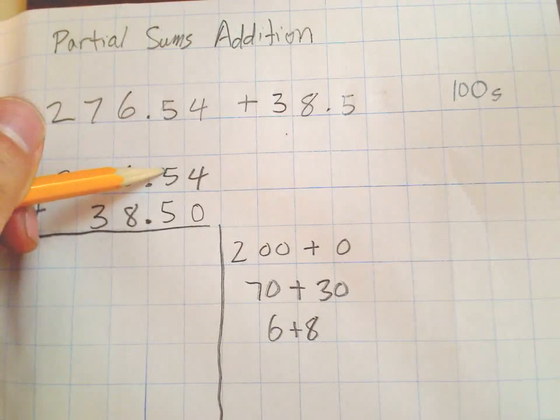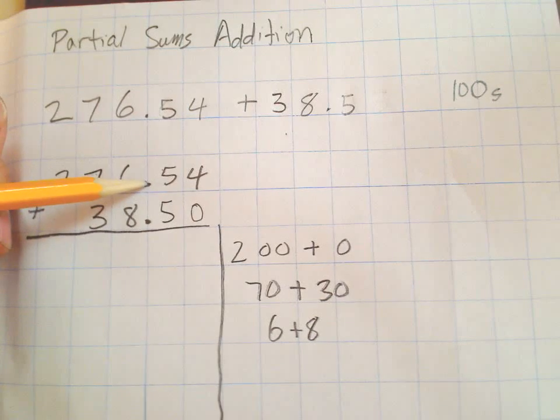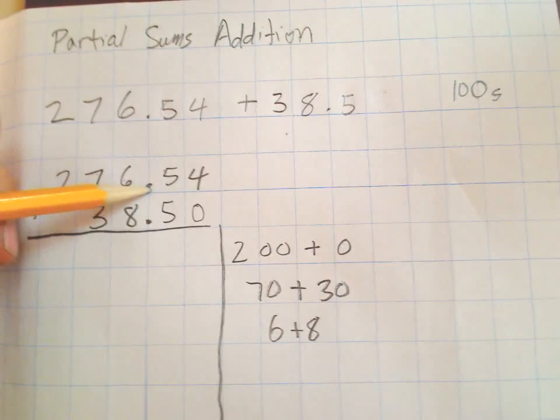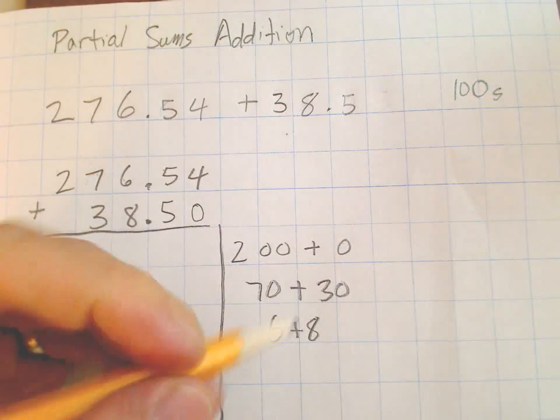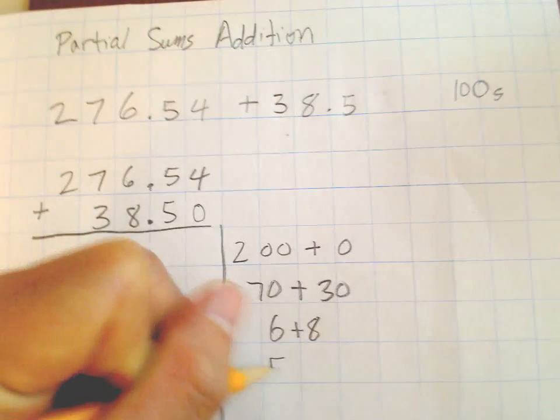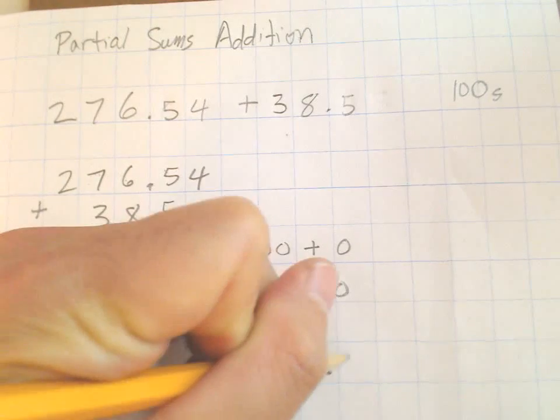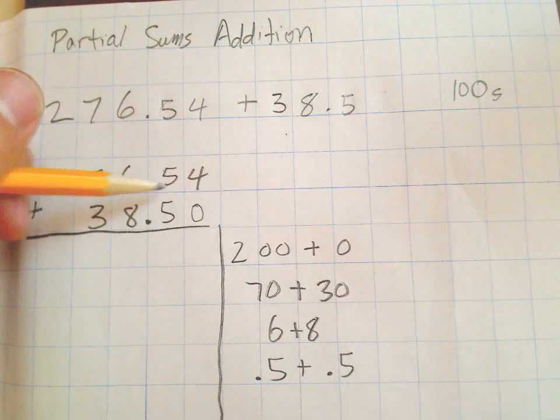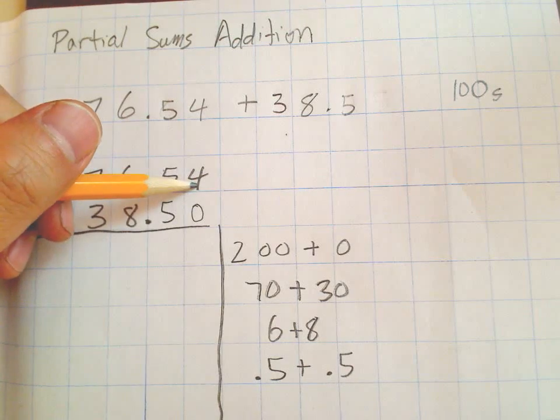Over here we've got five tenths plus another five tenths. We've now crossed into decimals, see, they're no longer whole numbers, so we've got to make sure to put that decimal place over there. That is five tenths plus another five tenths.